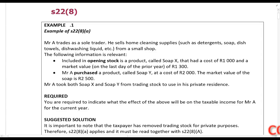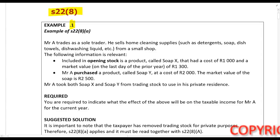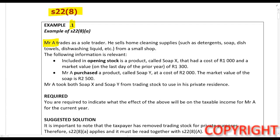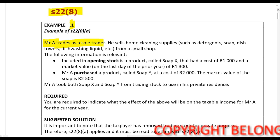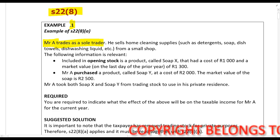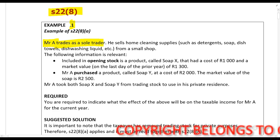In this example, we look at Section 22.8. First one: Mr. A, a natural person, trades as a sole trader. He sells home cleaning supplies such as detergent, soap, dish towels, and dishwashing liquids from a small shop.